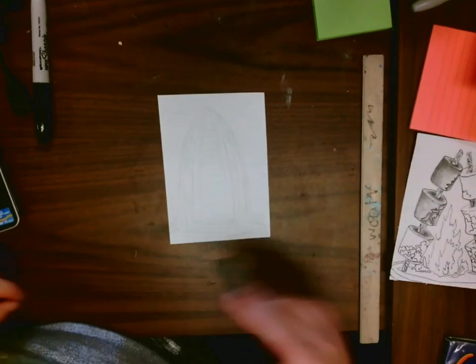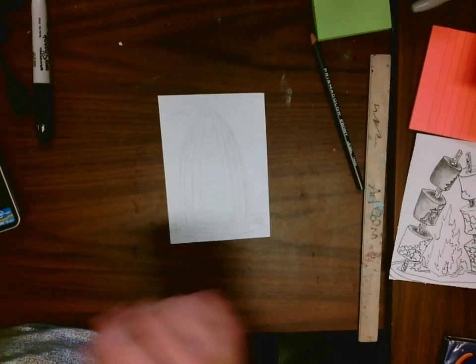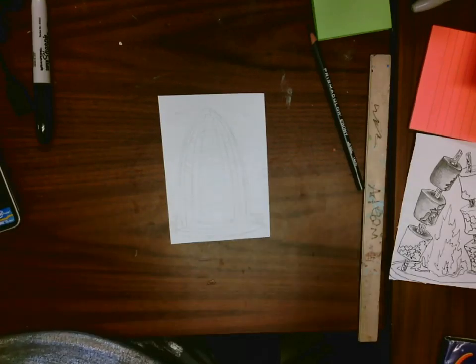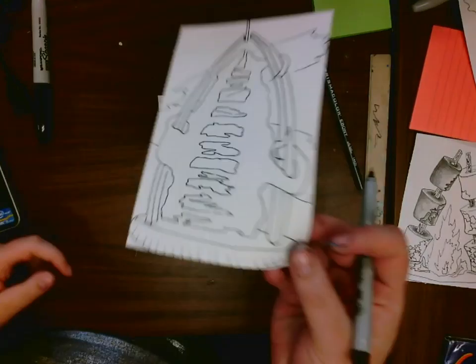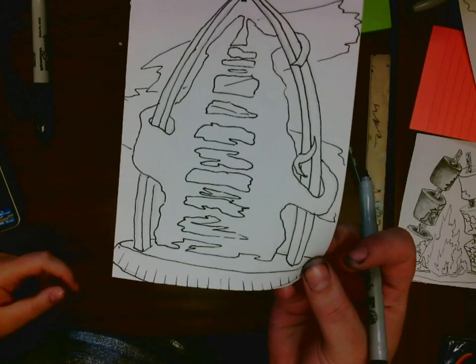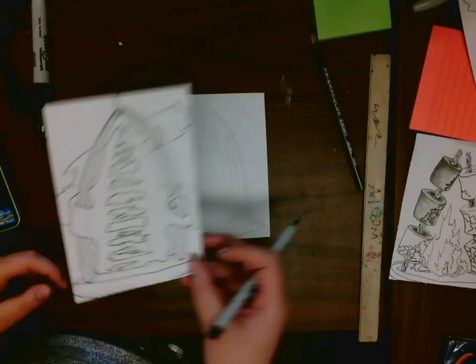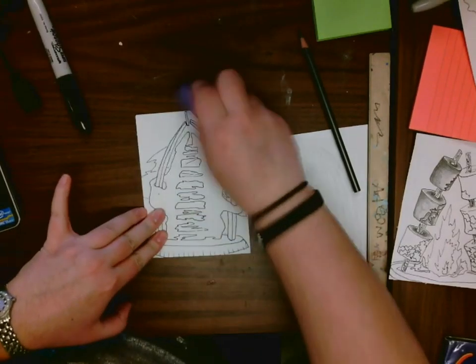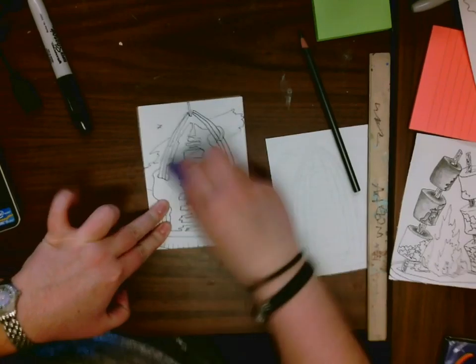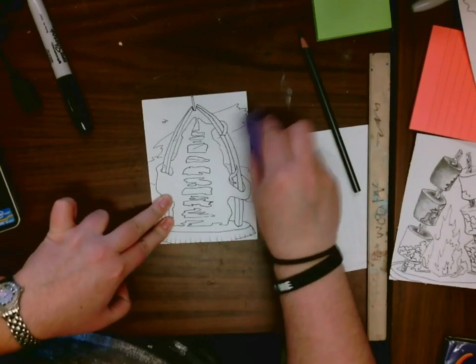When you're done with that, outline this in Sharpie. You just take your Sharpie, literally outline it. And then if you look at this one, I did not erase my pencil lines yet. You can still see it in the back. All you have to do is take an eraser and just hold it from a corner and erase your pencil lines before you begin adding value.